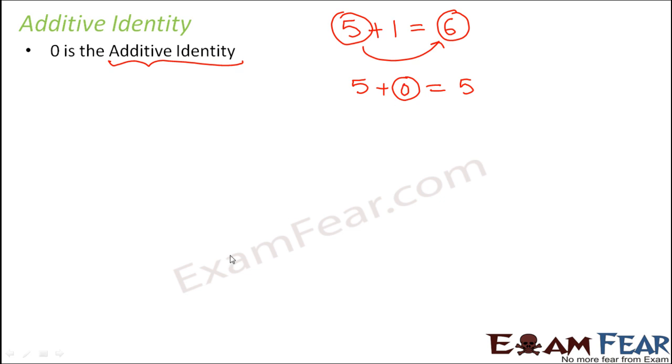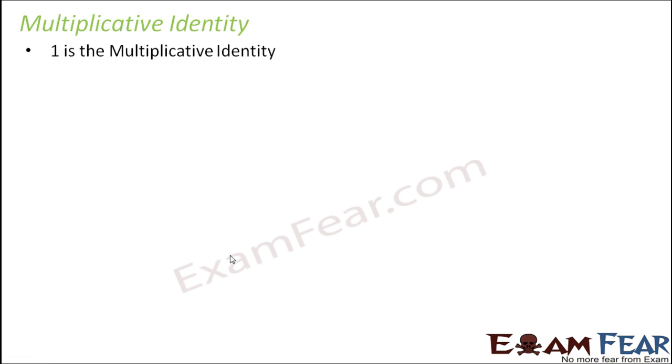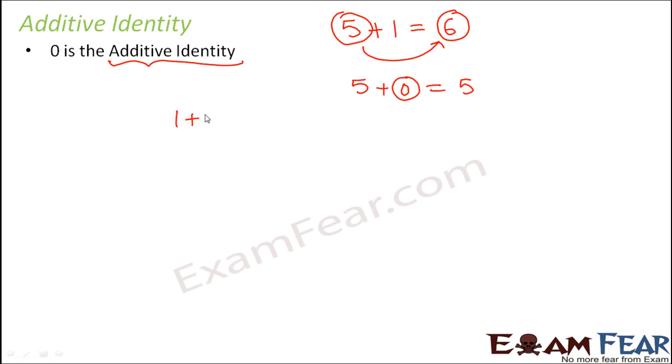That number is nothing but 0. You add 0 to any number, every number will remain the same. That is why 0 is called additive identity, because this happens only when you add 0. You talk about any number: 1 plus 0 gives 1, 65 plus 0 gives 65, 0 plus 0 gives 0, 1201 plus 0 gives 1201. In all cases, 0 retains the identity.